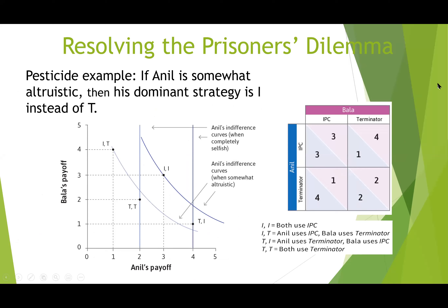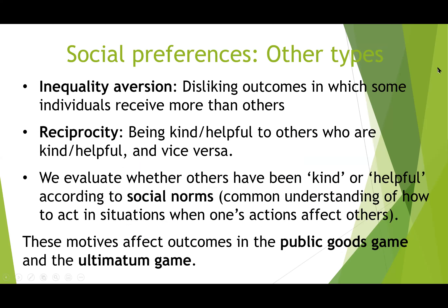Resolving the prisoner's dilemma: in the pesticide example, if Anil is somewhat altruistic, then his dominant strategy becomes IPC instead of Terminator. I standing for IPC and T for Terminator — you can pause here to work through the exercise.